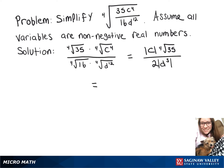And now since we know that our variables are non-negative real numbers, we can just write this as c times the fourth root of 35 over 2d to the third.